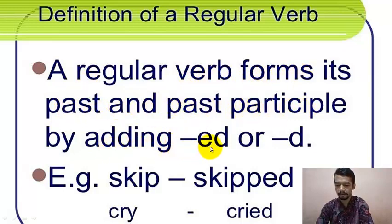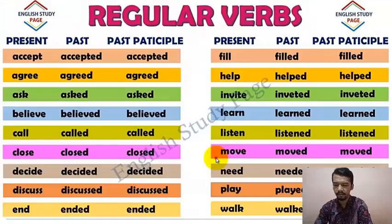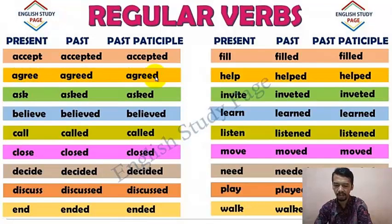In English, regular verbs form their past and past participle by adding -ed or -d. Regular verbs — 'kata kerja beraturan' — simply need -ed added. For example: 'skip' becomes 'skipped,' and 'cry' becomes 'cried.' So for regular verbs, the pattern is consistent — we just add -ed. Here is a chart with more examples: 'accept' becomes 'accepted,' and 'agree' becomes 'agreed.' You can check the full list later in the PDF slide that will be sent to Google Classroom.